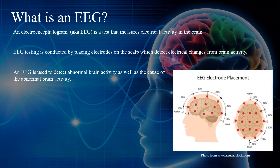An electroencephalogram, also known as an EEG, is a test that measures electrical activity in the brain. EEG testing is conducted by placing electrodes on the scalp which detect electrical charges from brain activity. An EEG is used to detect abnormal brain activity as well as the cause of the abnormal brain activity.